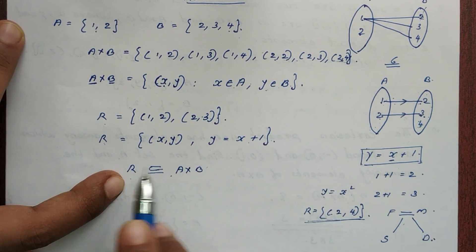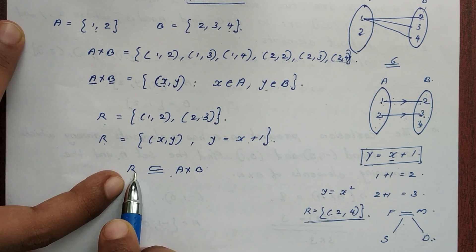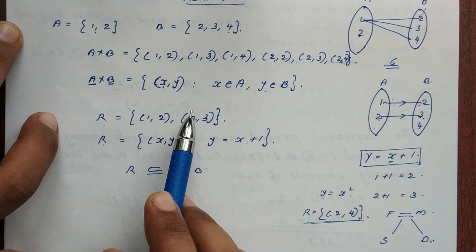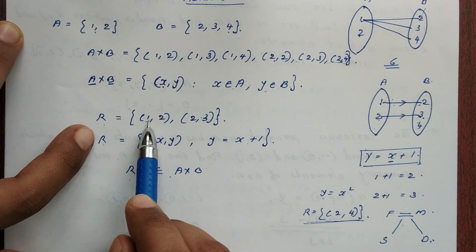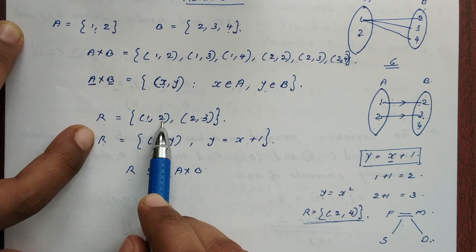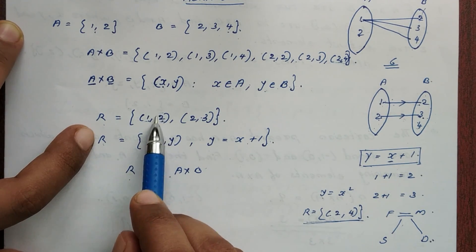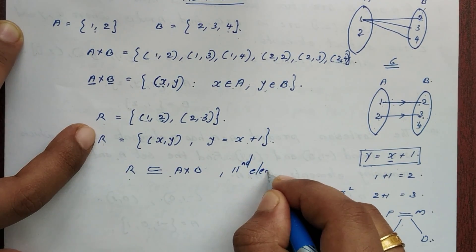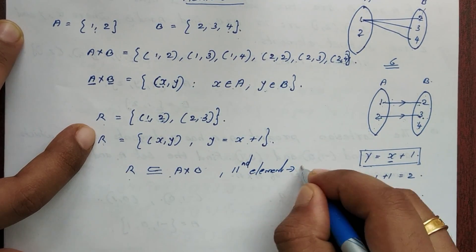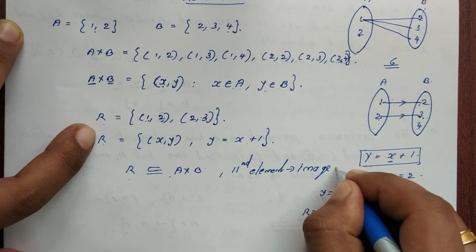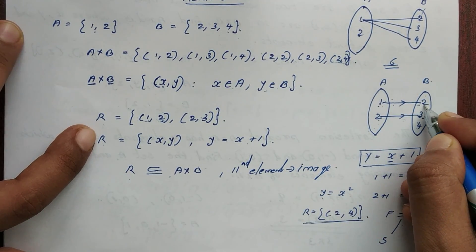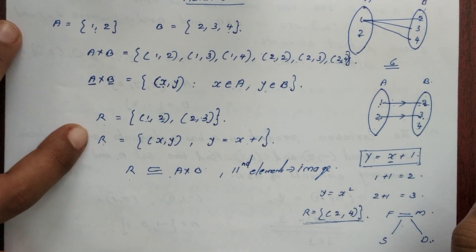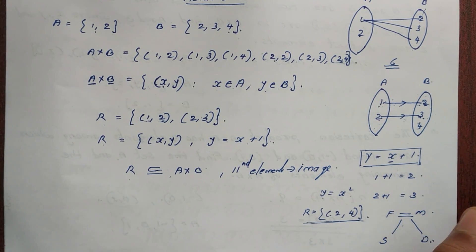A relation is a subset of A cross B. Each ordered pair has a first element and a second element. The second element is called the image. So the first element maps to the image, which is the second element.